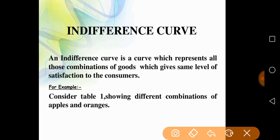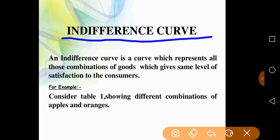The consumer equilibrium we have explained is based on the indifference curve, which is based on the ordinal approach of Professor Hicks. The indifference curve shows various combinations of two commodities which provide equal satisfaction to the consumer. The curve derived by Hicks is known as the indifference curve, and the consumer is neutral in the selection of these combinations due to equal satisfaction.